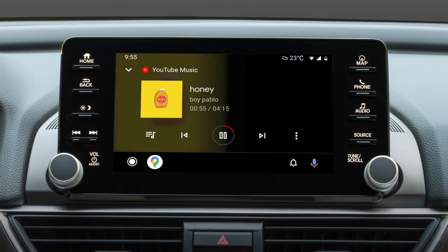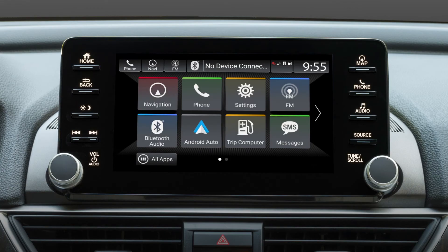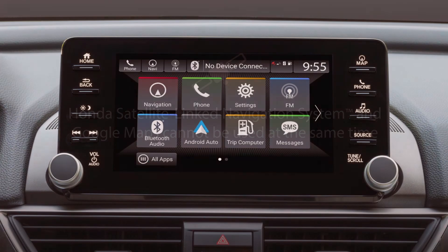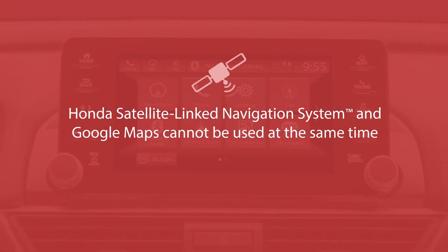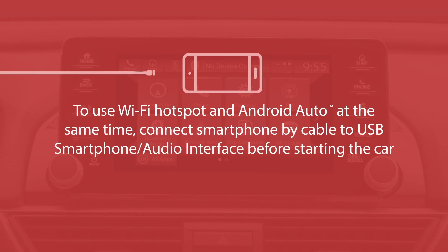Touch the home button to return to the display audio home screen. Note that models with the built-in navigation system can't use that system at the same time Google Maps is engaged. In addition, in vehicles equipped with the Wi-Fi hotspot capability, the smartphone will have to be connected to the vehicle by cable to the USB smartphone audio interface in order to use Android Auto and the hotspot at the same time. Just be sure to make the connection before turning the ignition on.